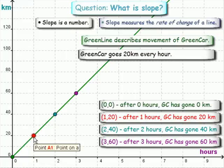What can we conclude about green car? Every hour, one hour went 20, the next hour it went 20 more, the next hour it went 20 more.